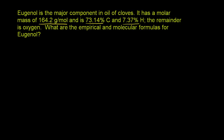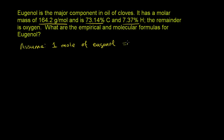The first piece of information they gave us is that the molar mass of eugenol is 164.2 grams per mole. To simplify things, let's just assume that we have one mole of eugenol. A mole is just a huge number — like saying we have a million molecules, but even bigger. Since we have one mole, that means we have 164.2 grams of eugenol.